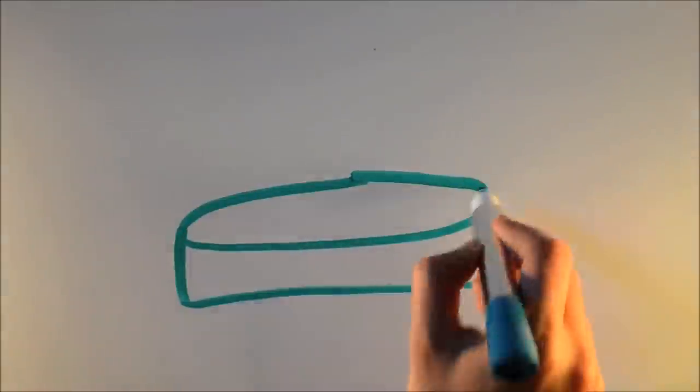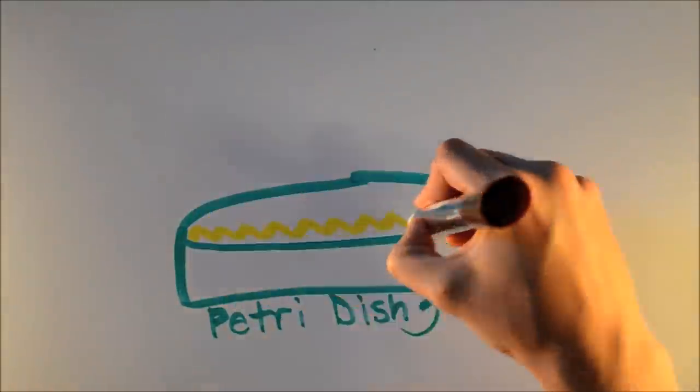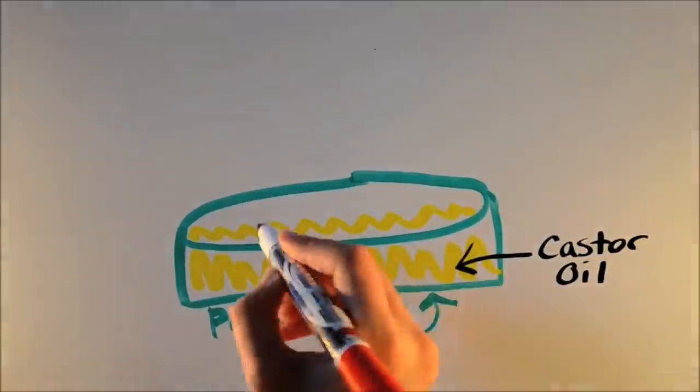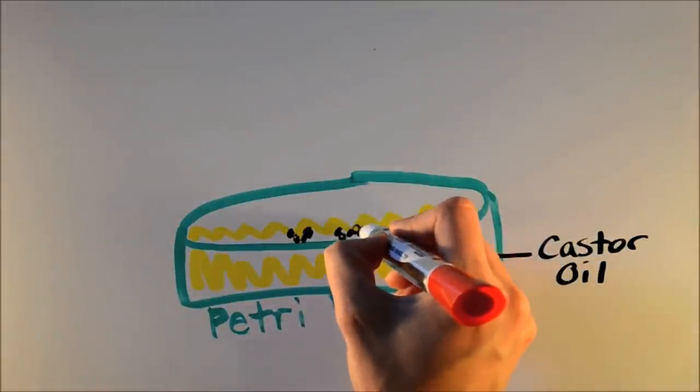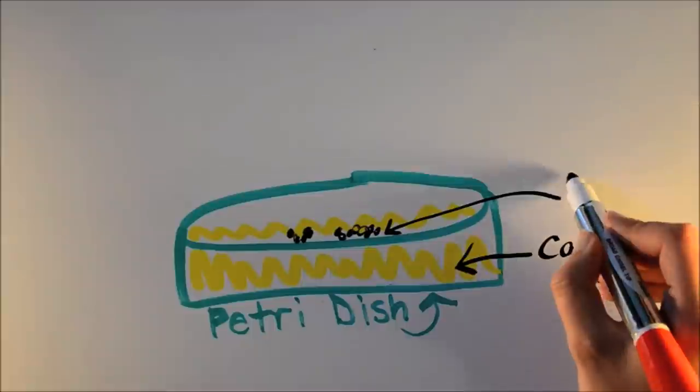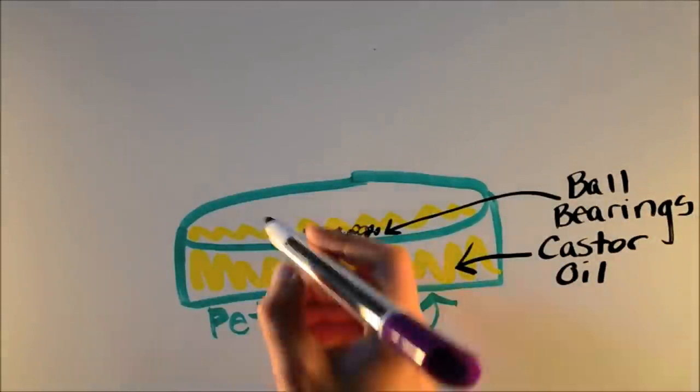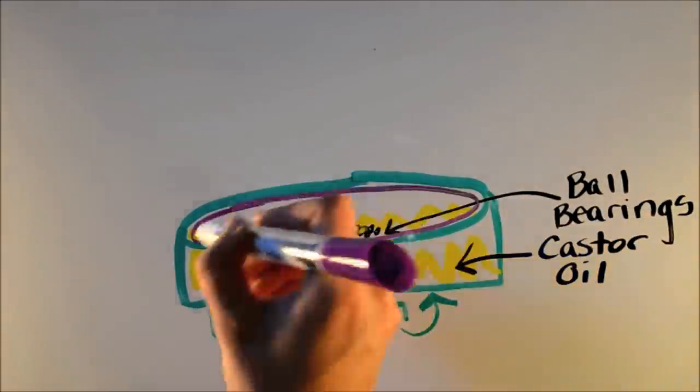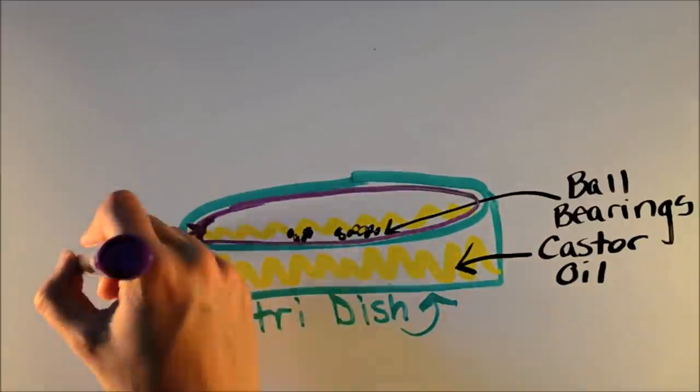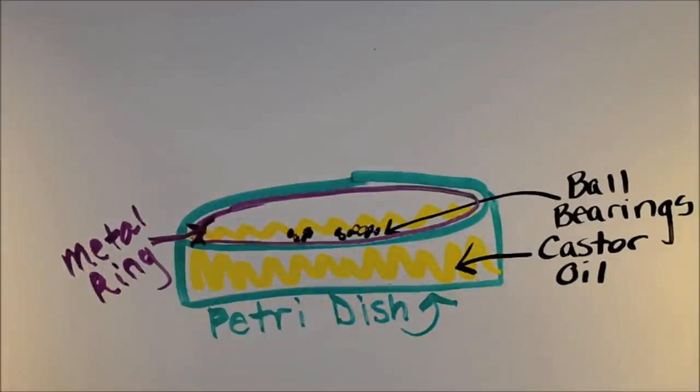First, let's go over the setup. We start out with a petri dish and fill it up with castor oil, then put in metal ball bearings. Castor oil is a bit thicker than vegetable oil and keeps the ball bearings from moving around too fast. The petri dish has a metal ring on the edge, which we apply a negative charge to.